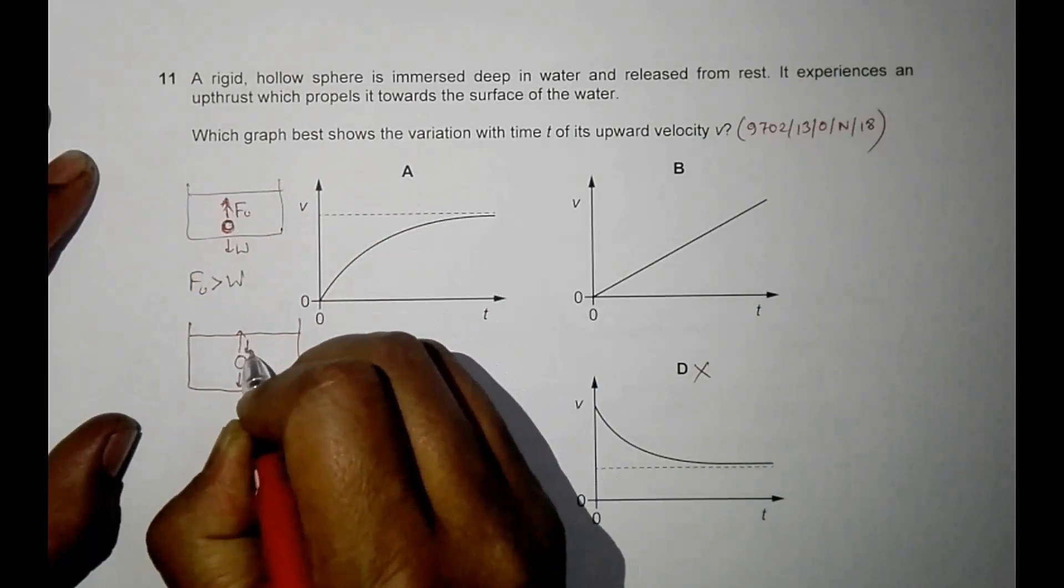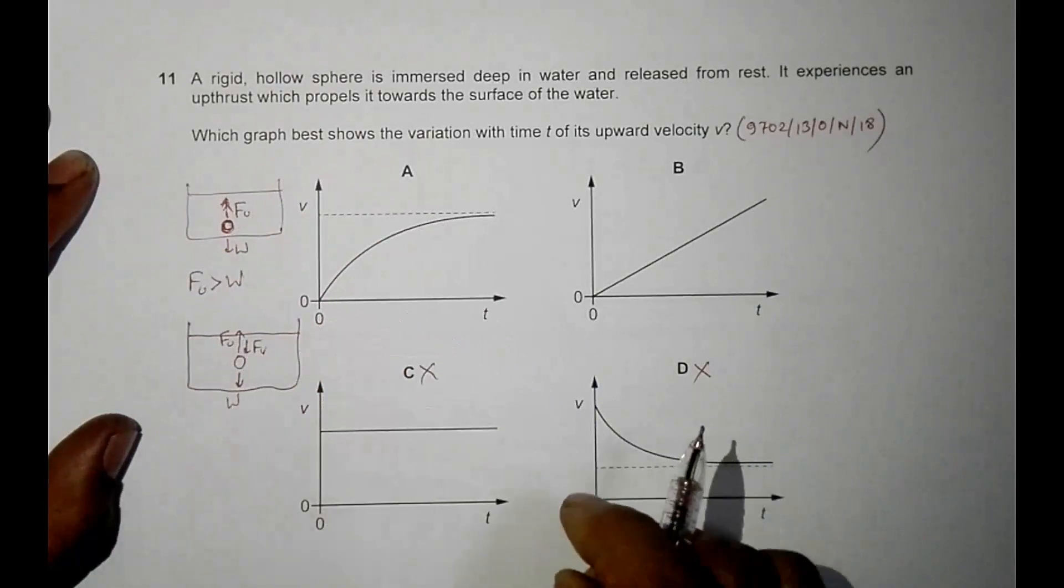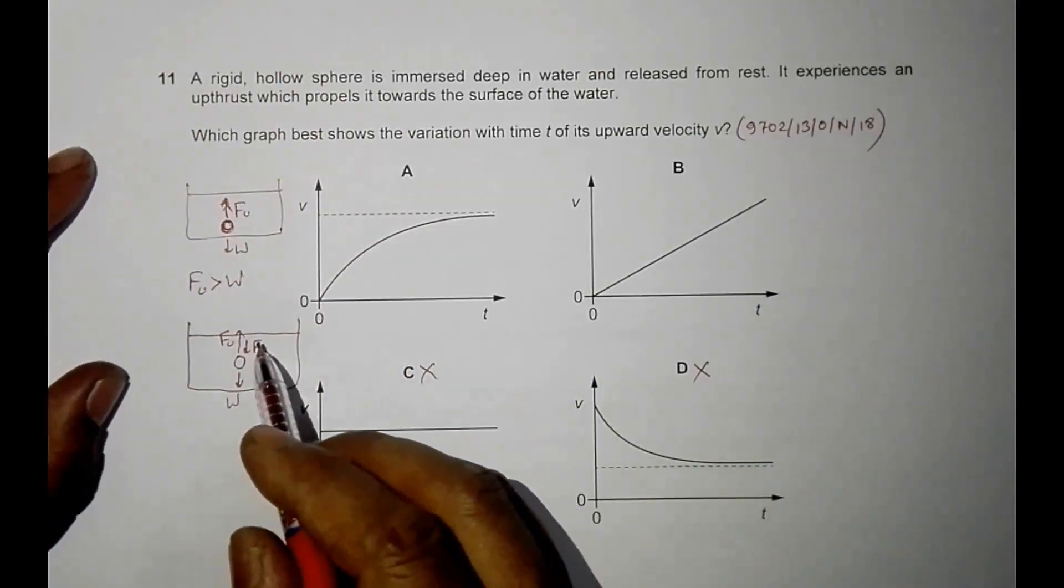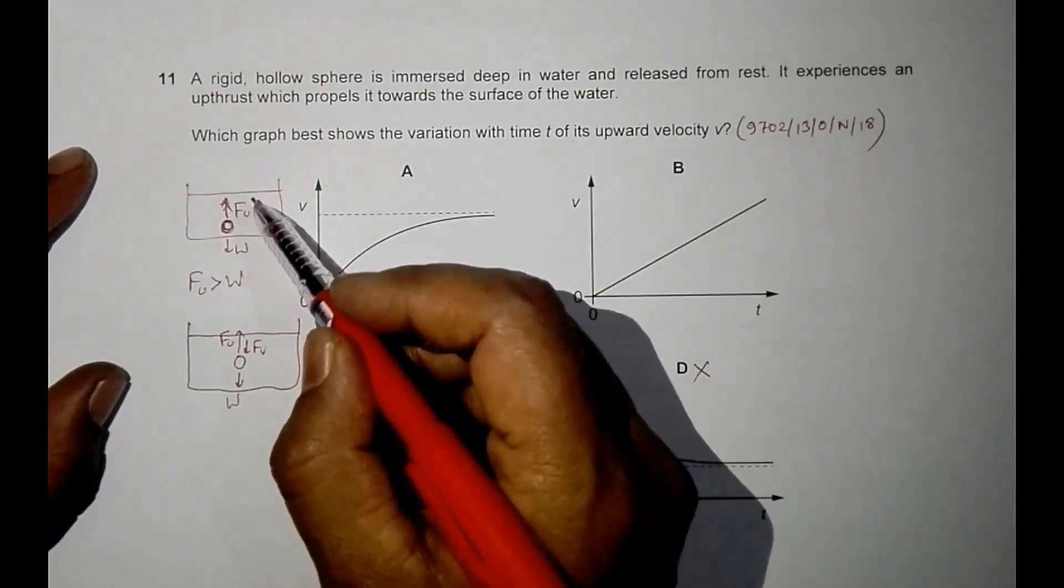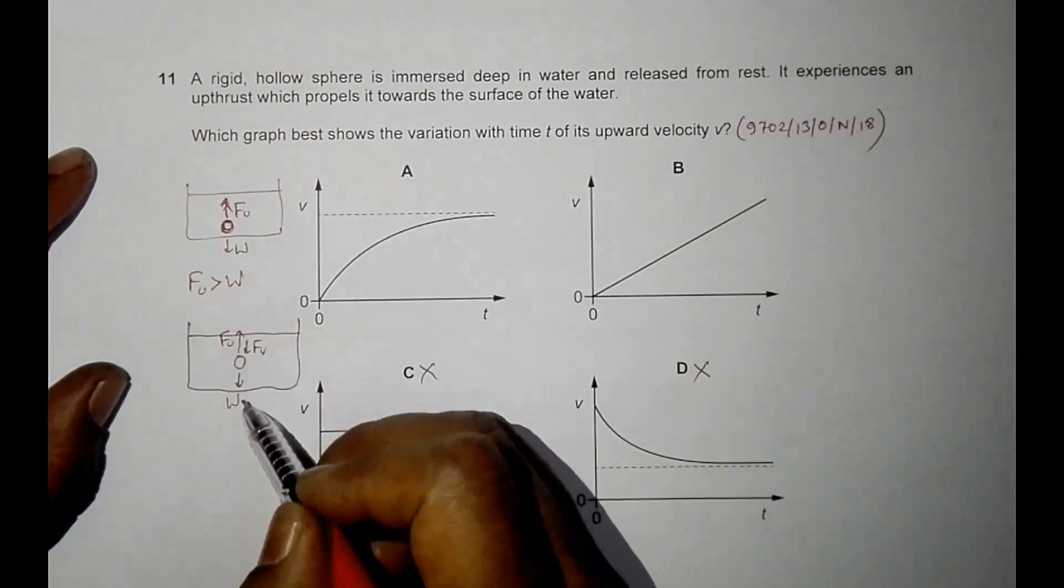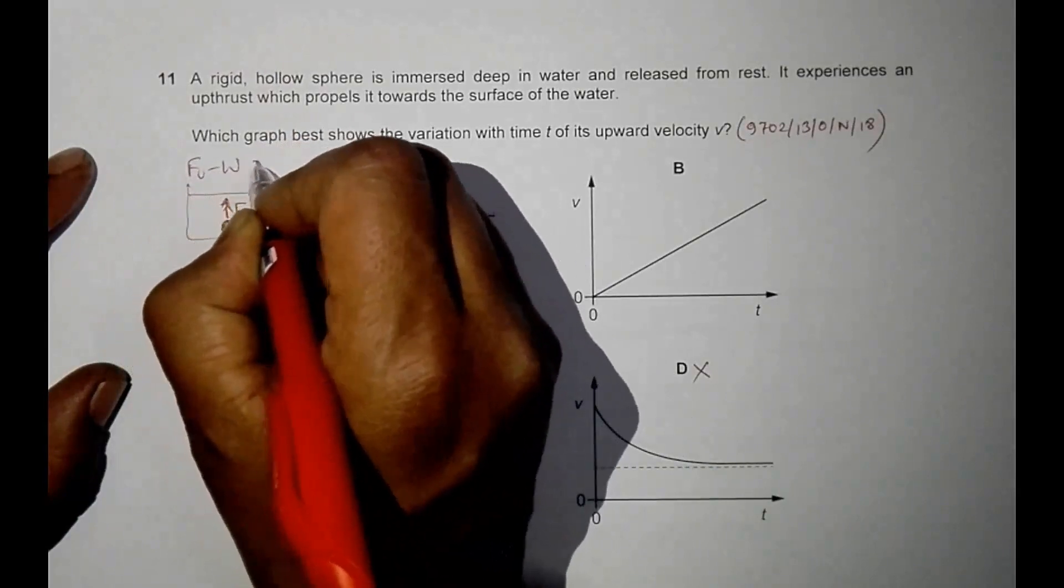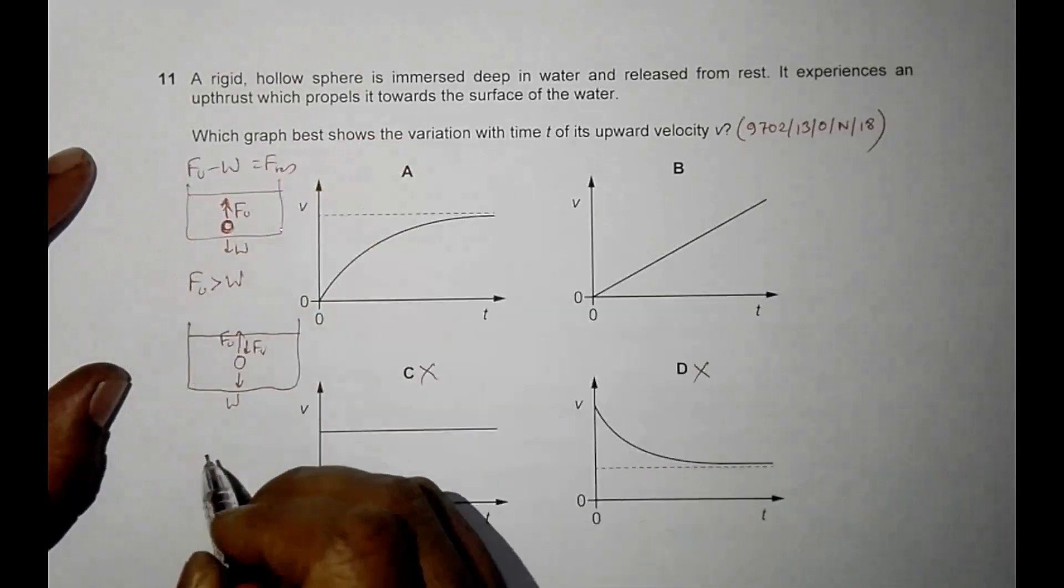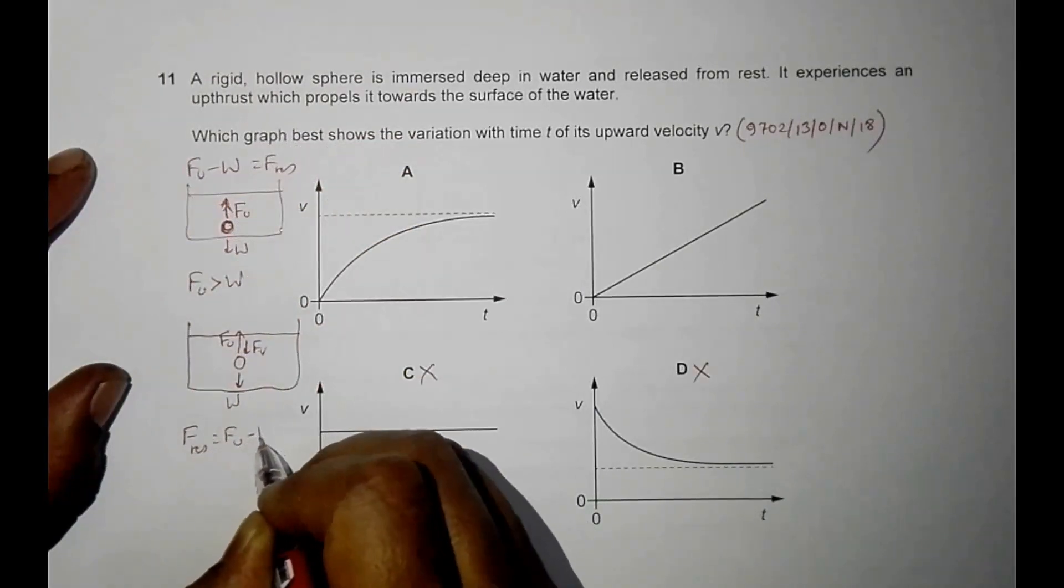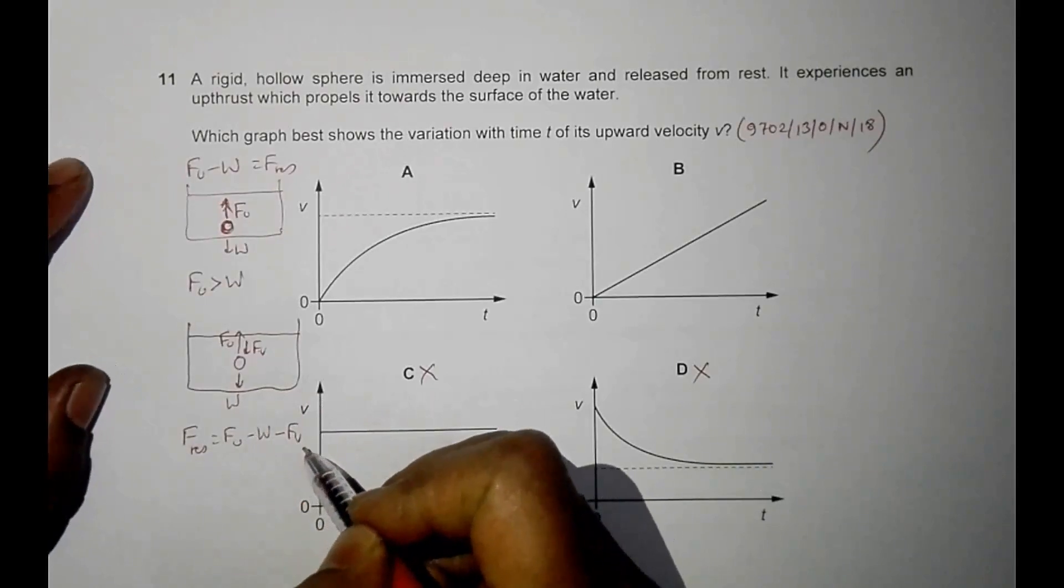This is upthrust and this is W. It means that the resultant force will be decreasing. Initially the resultant was F_u minus W. Now the resultant is F_u minus W minus F_v. So here F_u minus W equals F_resultant, and here we have F_resultant equals F_u minus W minus F_v.